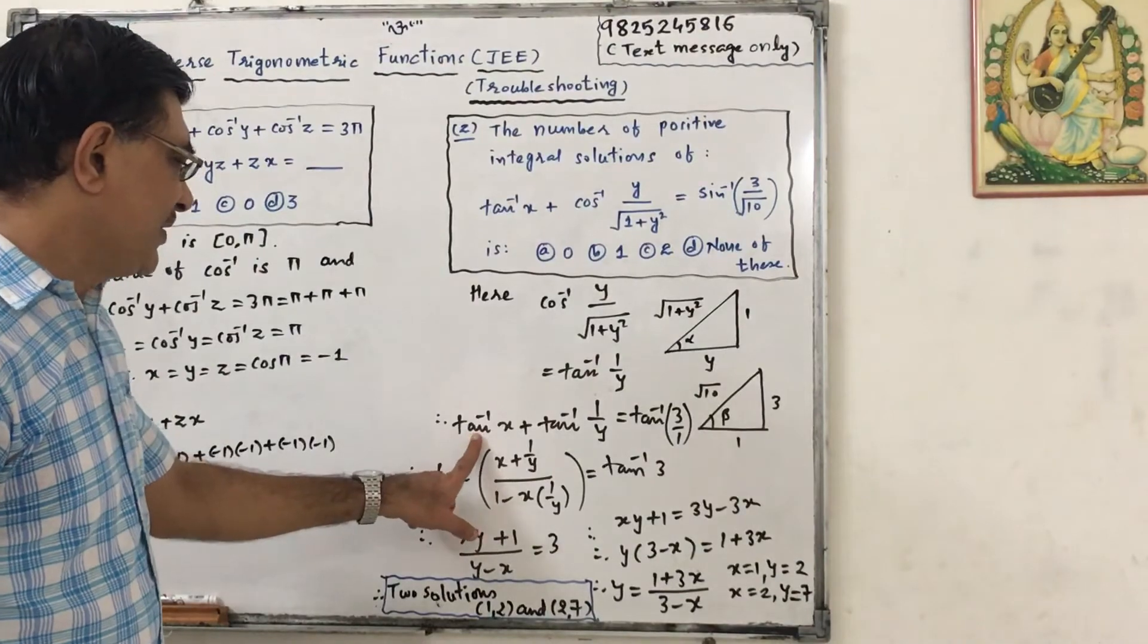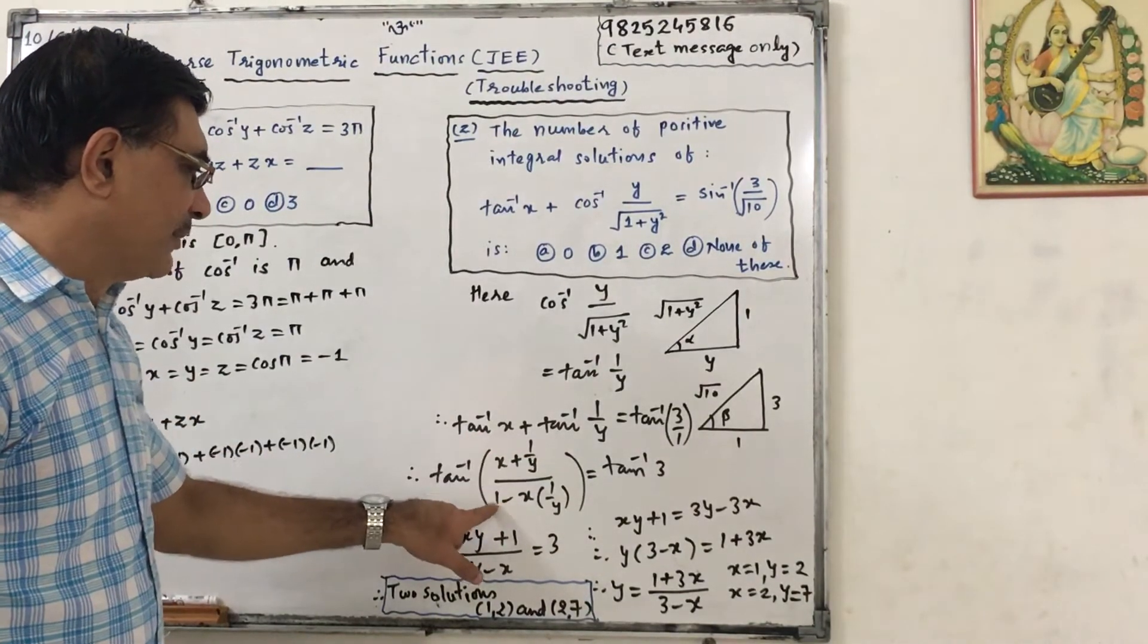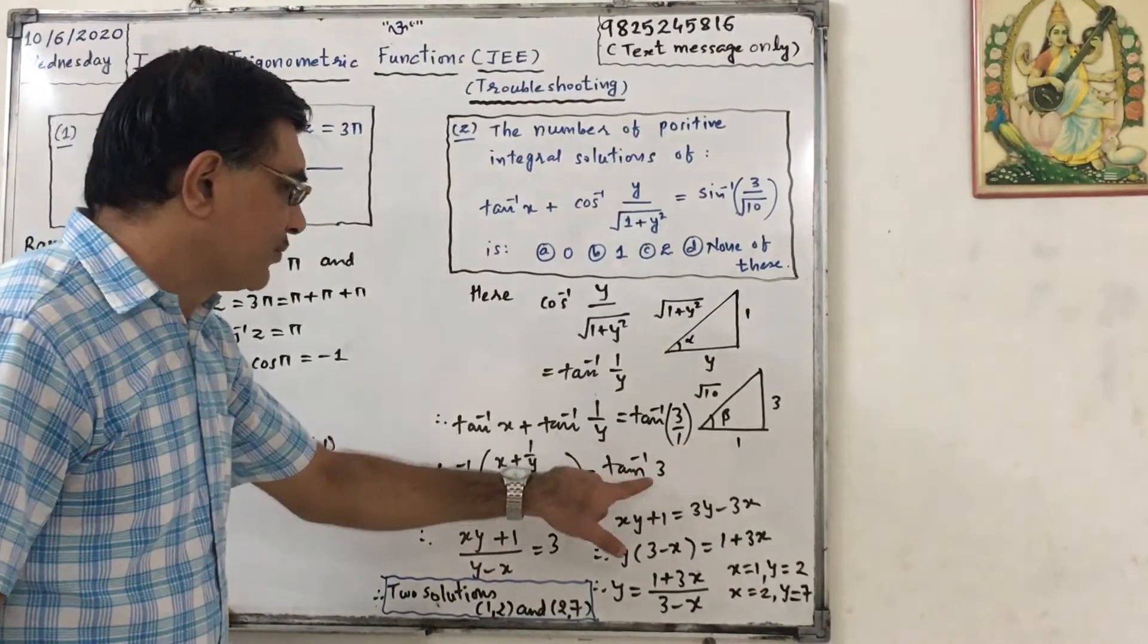Now we have formula for this. Tan inverse of x plus tan inverse of 1 upon y equals to tan inverse of x plus 1 upon y upon 1 minus x into 1 upon y equals to tan inverse of 3.